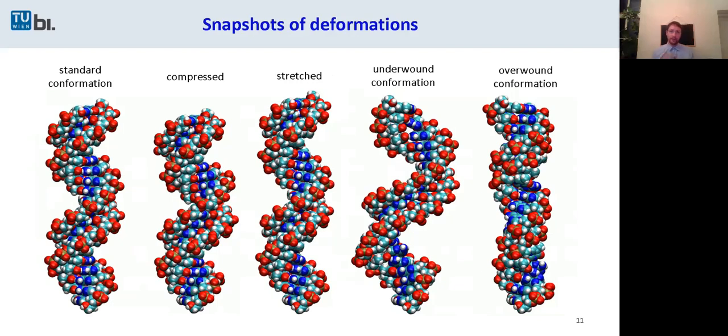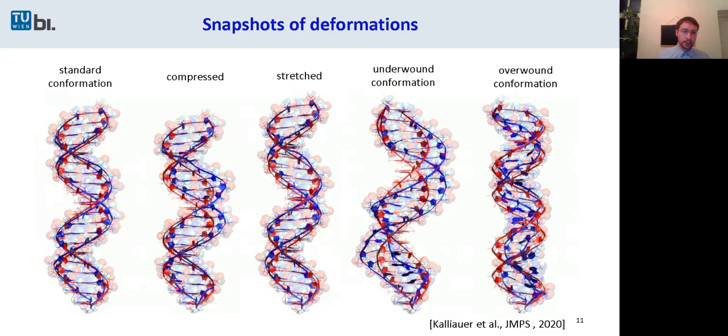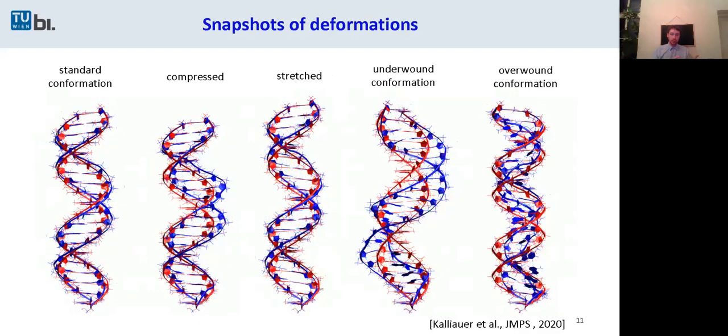So here you can see different snapshots of the deformations. The first one is a standard conformation, the second one compressed, stretched, underwound, and overwound conformation. And in the next picture, you can see the differences between the initial displacement field marked red, which is the homogeneous stretch and twist, and the blue.